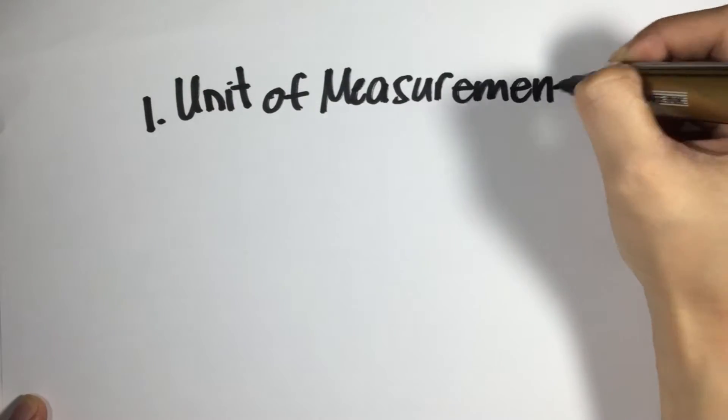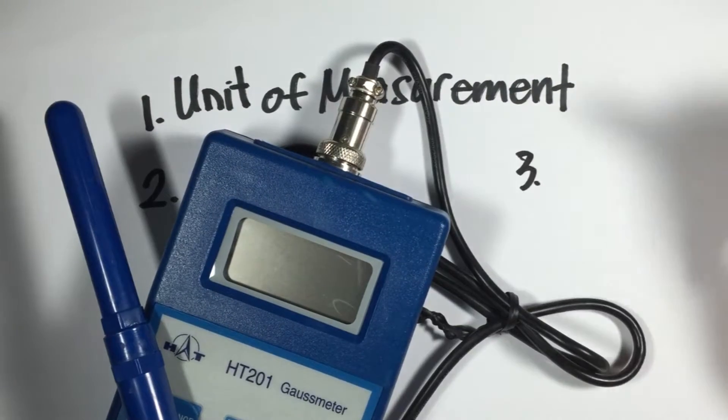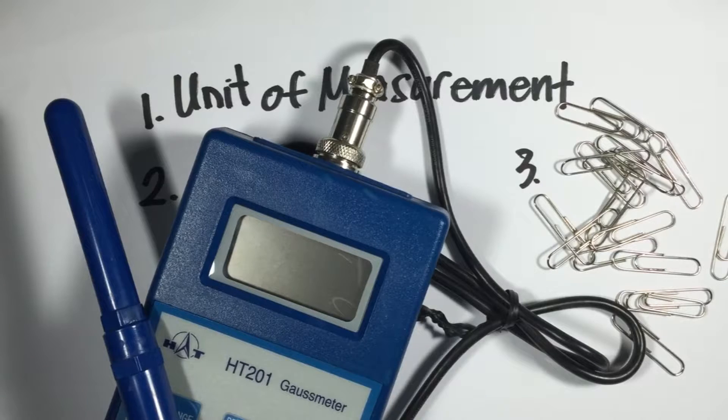First, we're going to talk about the unit of measurement. Next, we'll use a gauss meter. And last, if you don't have one, we'll use paper clips as a point of comparison in the last video.